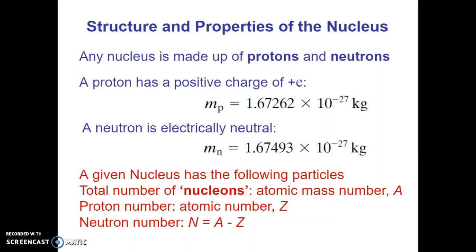In terms of notation, we use the atomic mass number, which is the total number of nucleons, meaning the total number of protons plus neutrons in the nucleus, and we symbolize that with the letter A. We'll also be using proton number, also known as the atomic number, and we're going to use the capital letter Z to denote that.